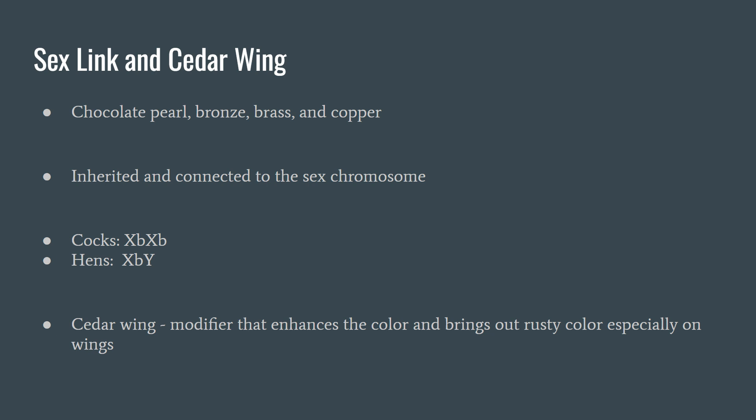Cedarwing is a similar but different genetic component — it is more of a modifier. Think of it as a dial that you can scale up or down. If anyone here is familiar with rabbit genetics, cedarwing is very similar to rufus in how it acts and how it controls and is displayed on the animal. When it is scaled up, it enhances the natural color but also brings out a very rusty color throughout the entire body of the bird, but especially on the wings. Cedarwing is often paired with sex-link bronze to create very beautiful birds.